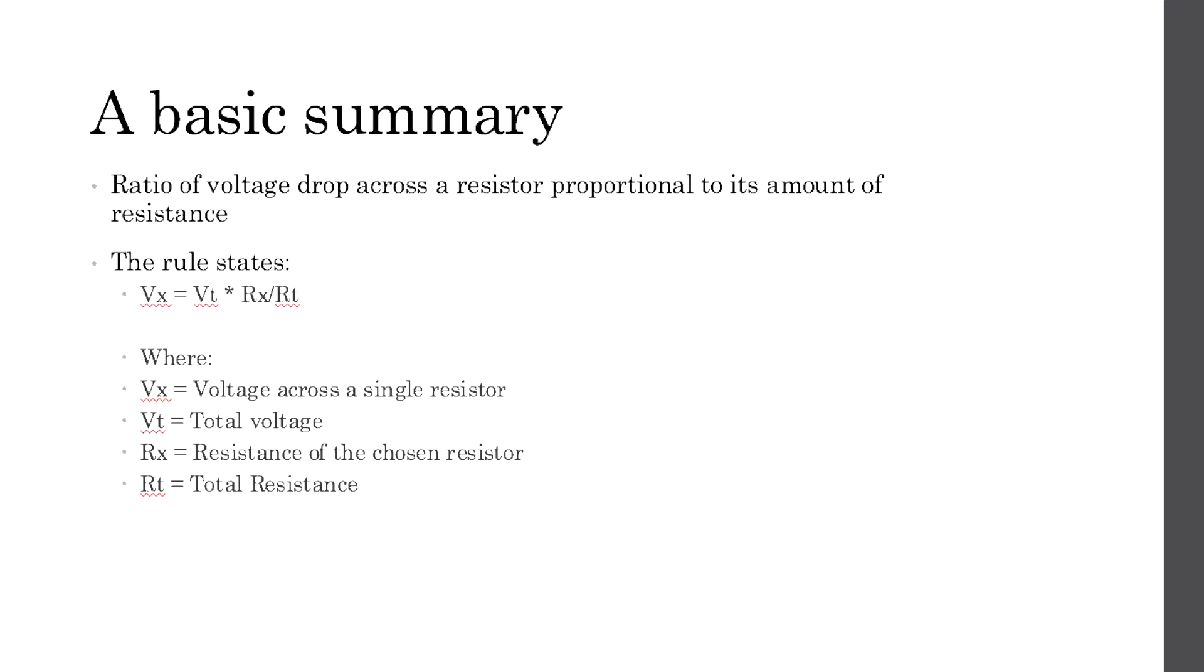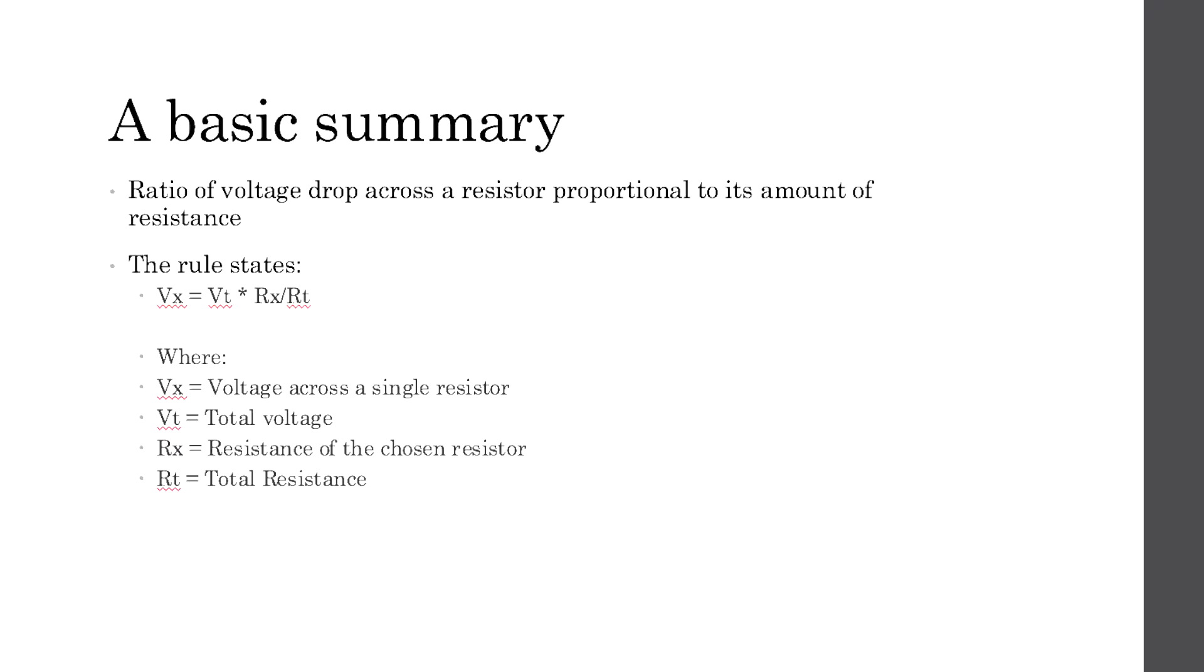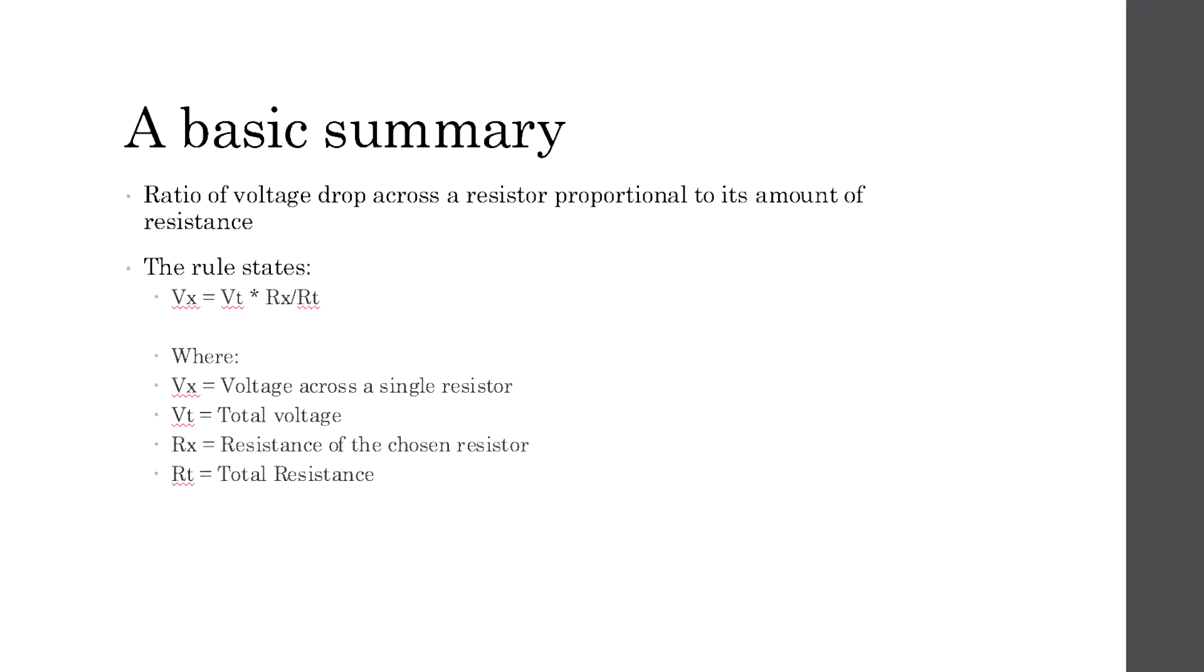That is, the greater the resistance, the greater the voltage drop will be across that resistor. The formula can be used as follows: the voltage across a particular resistor is equal to the total voltage entering the circuit multiplied by the resistance of the chosen branch, all over the total resistance.